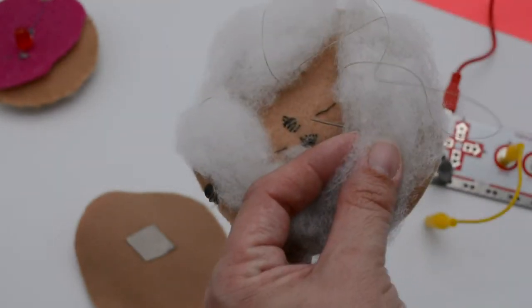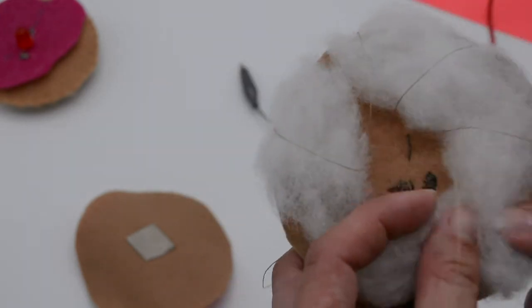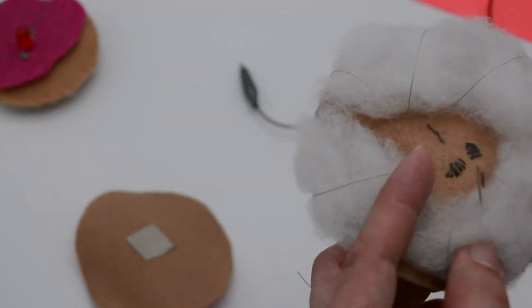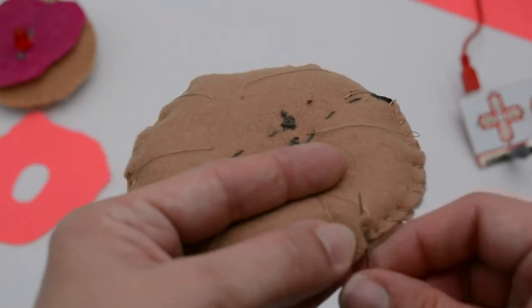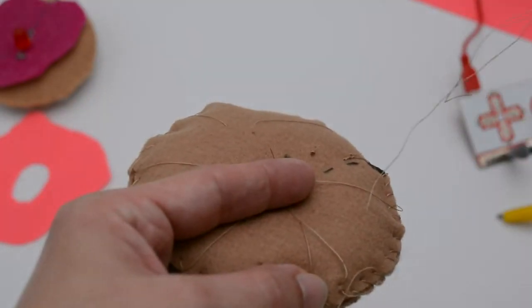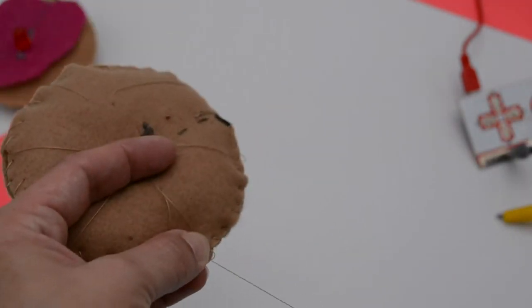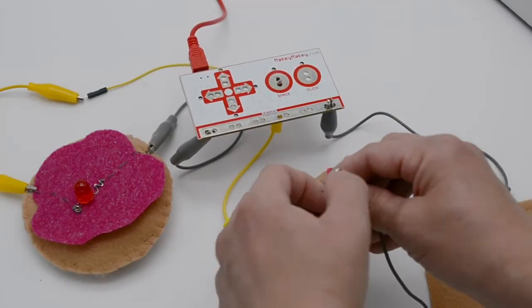So we're going to take some thread and kind of this is almost like trapunto which is when you're sewing stuffing in a felt design. So we're going to do a little bit of that by holding it together and it's kind of just going to keep give our donuts some shape on the bottom. Now we're ready to take the top of the donut and just do a nice little stitch to sew our two donut pieces together and we are going to have a conductive donut ladies and gentlemen.